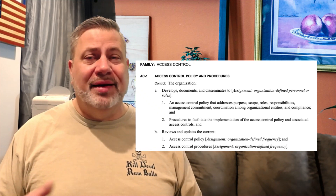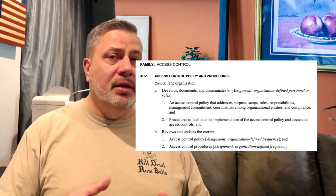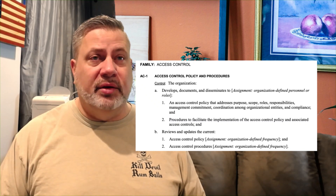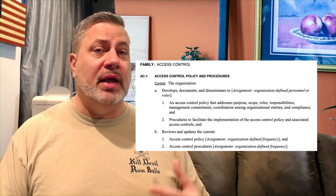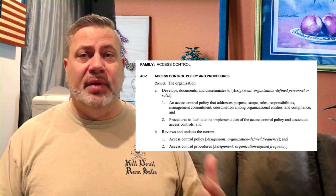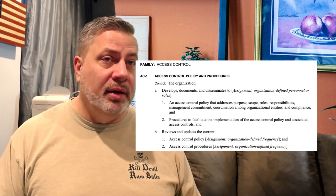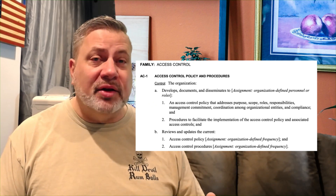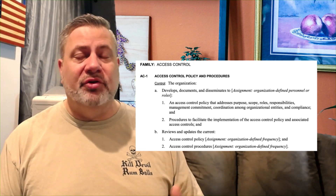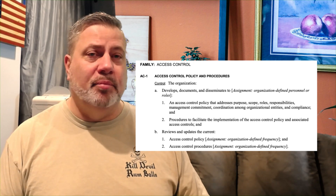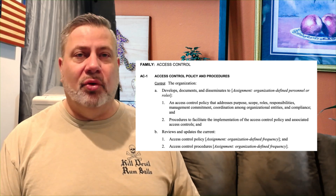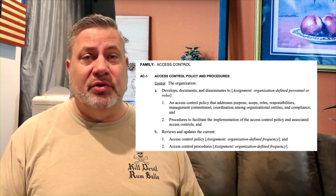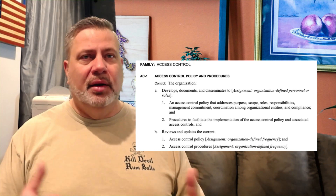How do we ensure compliance with this document? Is there a requirement that everyone reads it? Is there a requirement that if you break the policy, something happens? All of that has to be documented in your policy. The procedure facilitates the implementation — that's the more detailed part of how this policy actually gets implemented. The procedures for implementing access control and all the controls around it. So when we talk about things like AC-2, AC-3, and AC-4, those shall be wrapped in your procedures as well at a high level. And there's got to be a review cycle — how often do we review and update the policy and procedures.